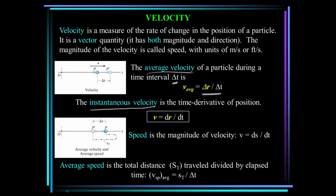However, the instantaneous velocity is the time derivative of position, so velocity is dr/dt. Now, speed is just the magnitude of the velocity, and the average speed we can define as the total distance traveled divided by the change in time.